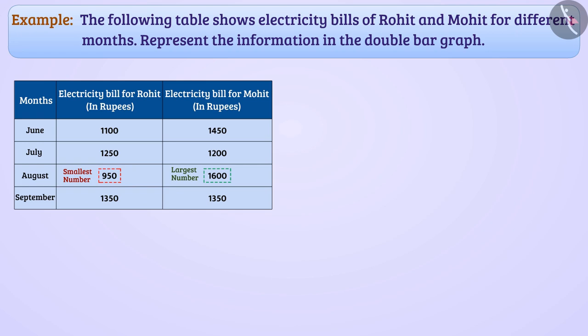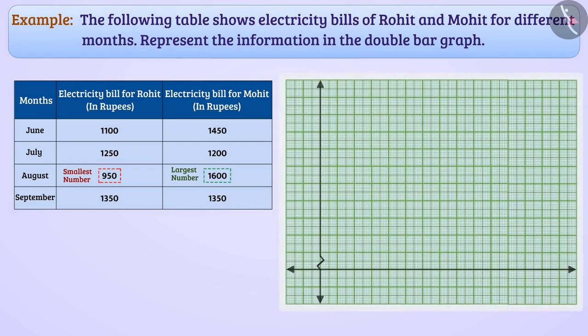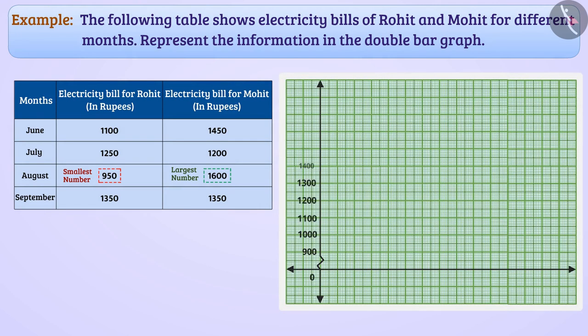So, here we do not have to start from 0 but we can take numbers from 900 to 1700. We will draw a zigzag line to show that we are not showing numbers from 0 to 900. It will be easy to use this scale as there is no number from 0 to 900. We can take 1 unit is equal to 100 rupees as scale.